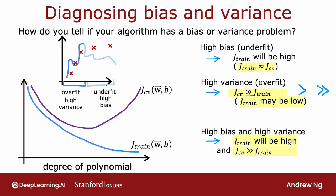For most learning applications, you'll primarily have either a high bias or a high variance problem rather than both at the same time, though it is possible sometimes to have both. The key takeaways are: high bias means the algorithm is not even doing well on the training set, and high variance means it does much worse on the cross-validation set than the training set. Whenever I'm training a machine learning algorithm, I'll almost always try to figure out whether it has high bias or high variance, as this gives good guidance on how to improve performance. Next, let's look at how regularization affects bias and variance.